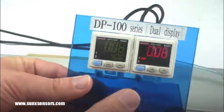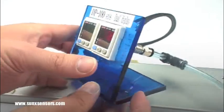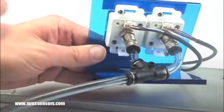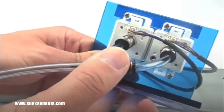The DP100 series from Sunex is an all-in-one dual digital display pressure and vacuum sensor in a compact housing and is very easy to set up.